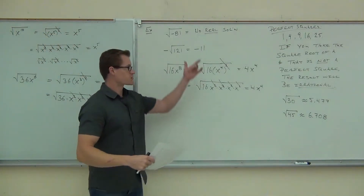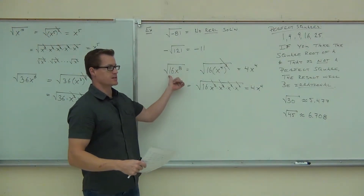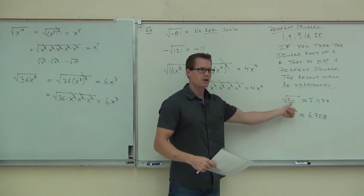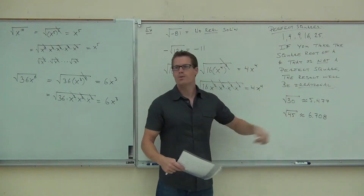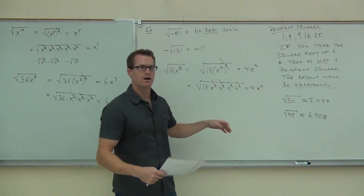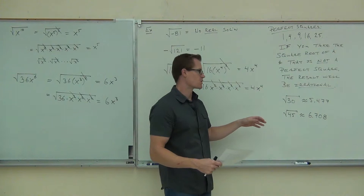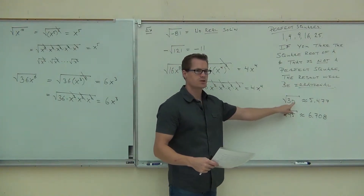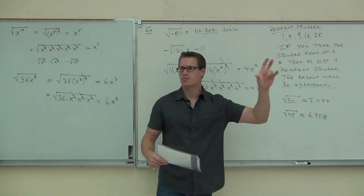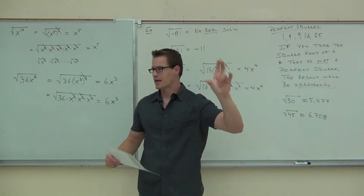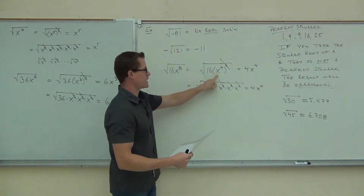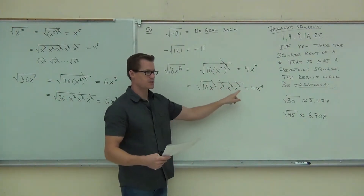Any number I give you, if it's a perfect square, it's pretty easy, like 4. If it's not a perfect square, right now all we have is a calculator method. I'm going to teach you a method in a couple sections from here, where we can simplify these numbers to get something that's still radical, but we can make the radicand smaller by simplifying — very similar to this idea.